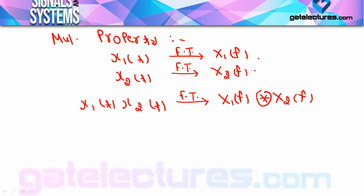So if you have multiplication in the time domain, then in the frequency domain you get convolution. If you have convolution done in the time domain, then in the frequency domain you get multiplication. So here you will understand how we can use this property.